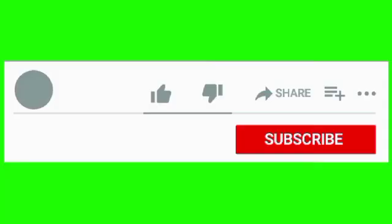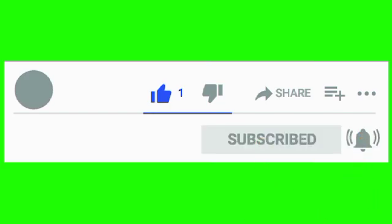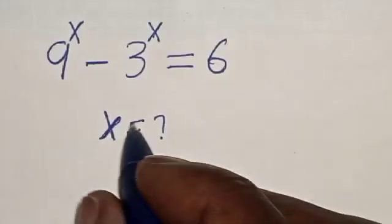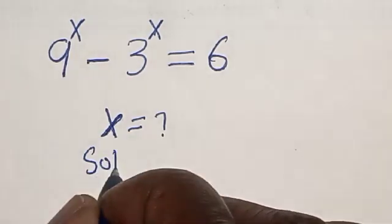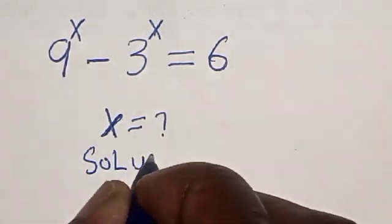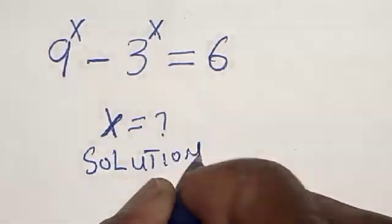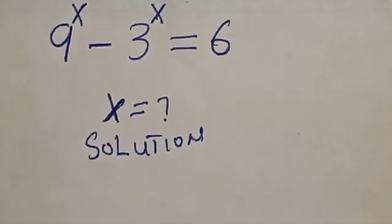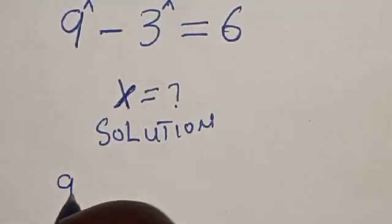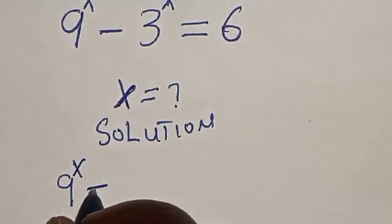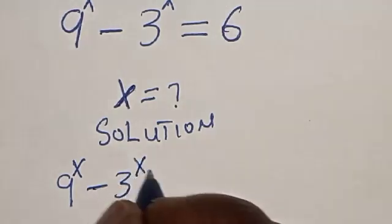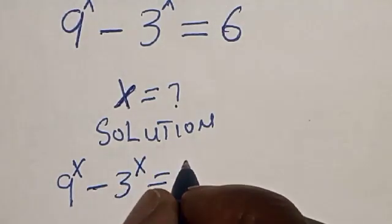But before we move on, kindly like, share, comment and subscribe. Thank you. Solution: 9 raised to power x minus 3 raised to power x is equal to 6.